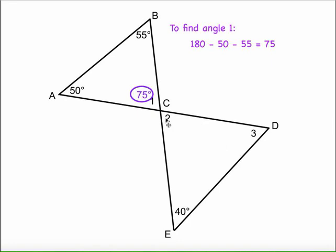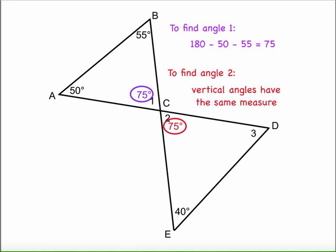To find angle two, we're going to go back to one of our last lessons. Angle two is a vertical angle with angle one and vertical angles have the same measure. So angle two is also 75 degrees.